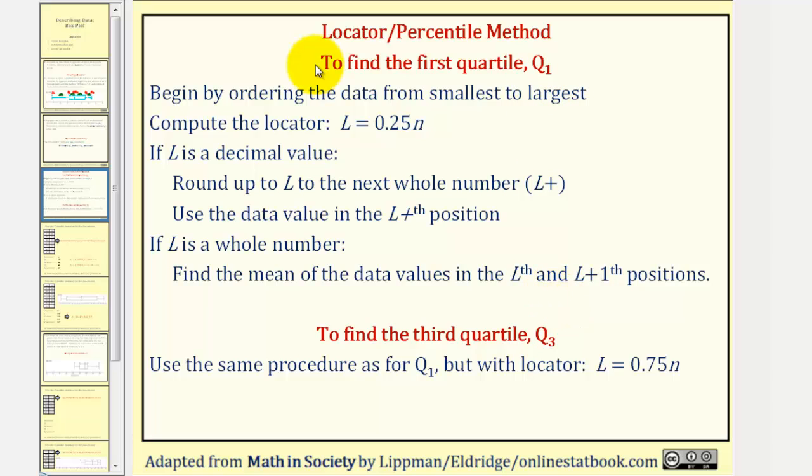So just for a quick review, using the locator method to find Q1, we find L equals 0.25 times N, where N is the number of data values. If L is a decimal, we round up to the next whole number and use the data value in the rounded-up position as Q1. If L is a whole number, then we find the mean or the average of the data values in the L and L plus one-th positions.